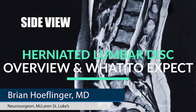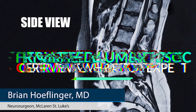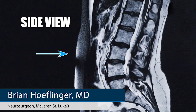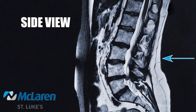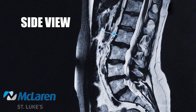This is an MRI of the lower back. We're looking in from a side view, so to get you oriented, this would be the front of the abdomen, this would be the outside of the back, and this here would be the tailbone. The bones are numbered, so this would be the fifth lumbar vertebra, the fourth lumbar vertebra, the third, second, and first lumbar vertebra.